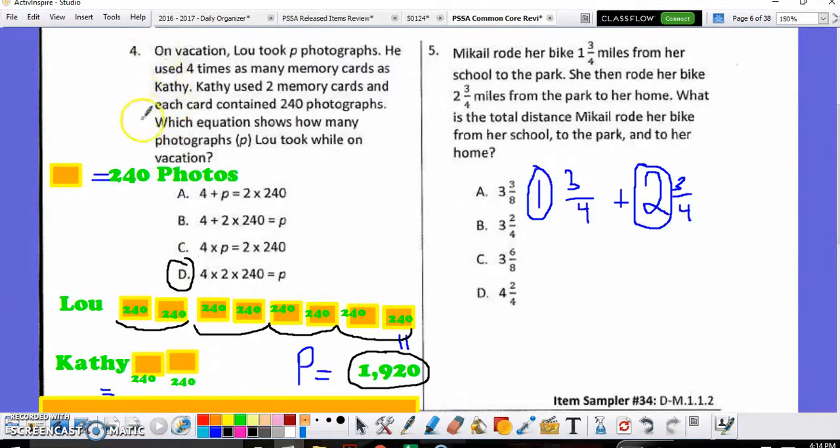But once again, this is a question where you need to come up with a KWS. The K is a bar model showing what I know. I know how much Lou had. I know how much Kathy had. The W is what we want to know. This number sentence, which of these was the one that gave me the answer of 1,920. And it wound up being D.